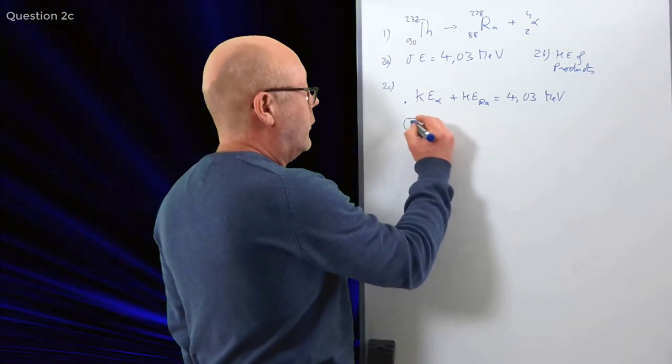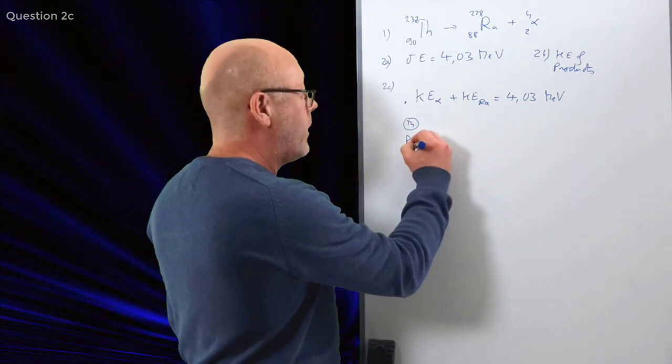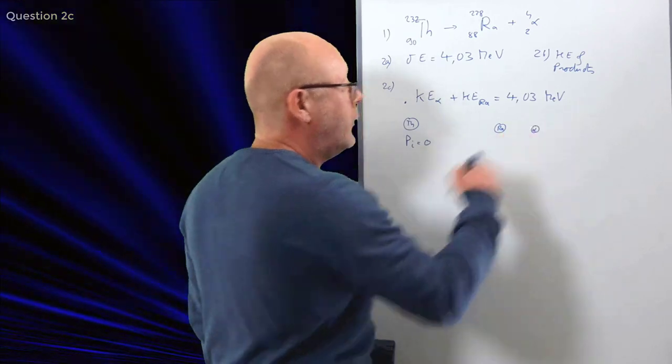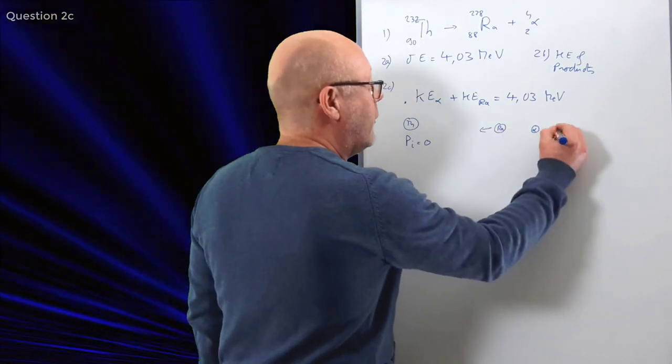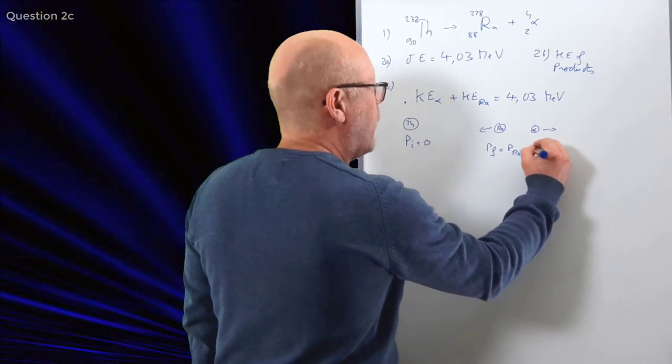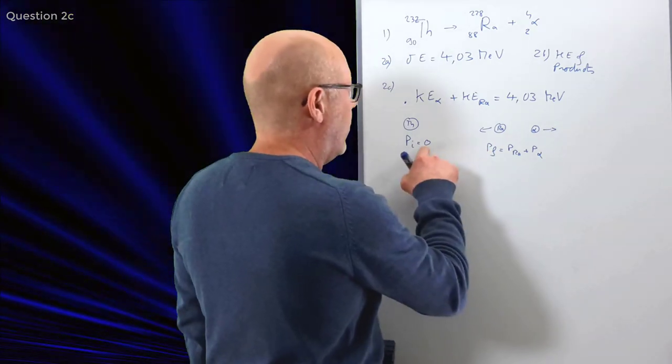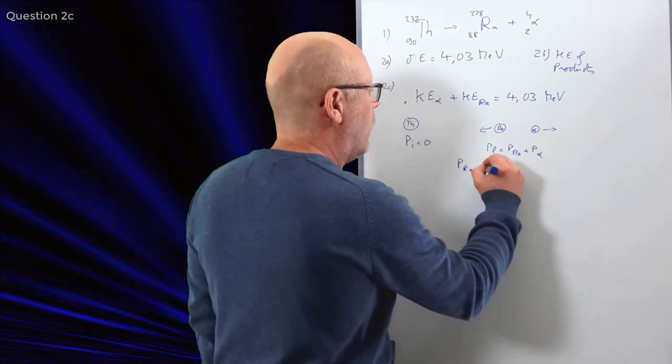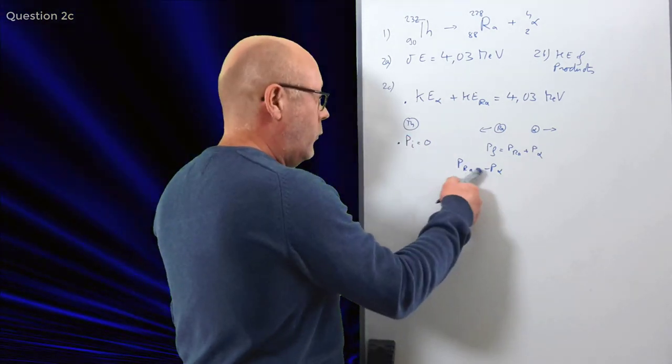Yeah. You have your thorium nucleus in its initial state. It's at rest according to the text. So the initial momentum is zero. Then after the decay, you have the radon and the alpha and they split. The thorium split into these two. Poof. Like this. So the radon and the alpha have got momentum. The final momentum will be the momentum of the radon plus the momentum of the alpha. By conservation of momentum, you end up with radon plus alpha equals zero. So P radon equals minus P alpha.